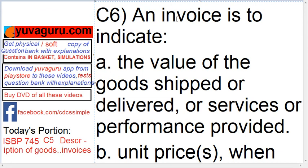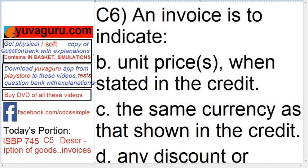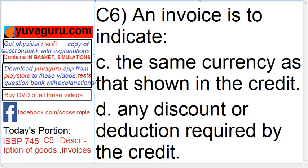C6: an invoice is to indicate the value of the goods shipped or delivered, or services or performance provided — meaning the total value of the goods or services given. (B) The unit price, when stated in the credit — this is required only if the credit states the unit price, otherwise not. (C) It should be in the same currency as shown in the credit. (D) Any discount or deduction required by the credit — if the credit states a certain discount is to be given, that should strictly appear in the invoice as well.